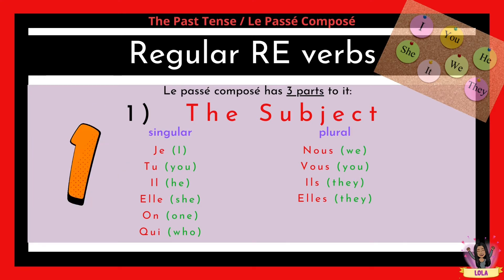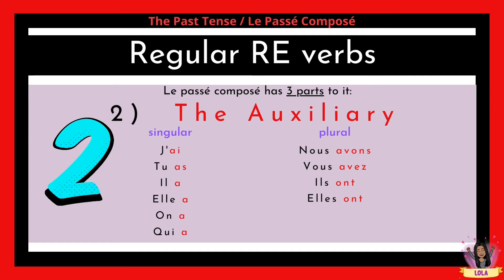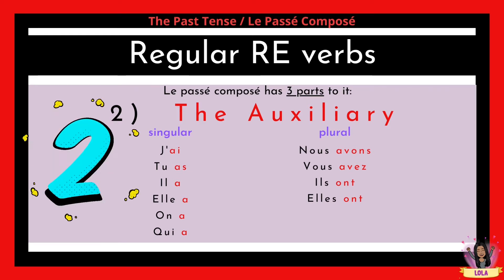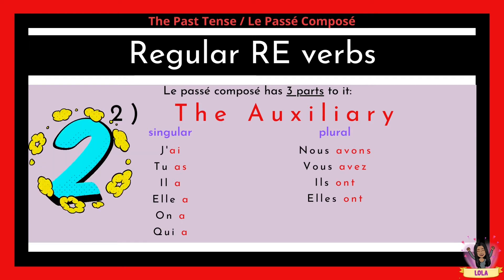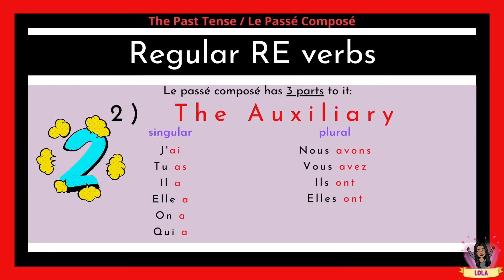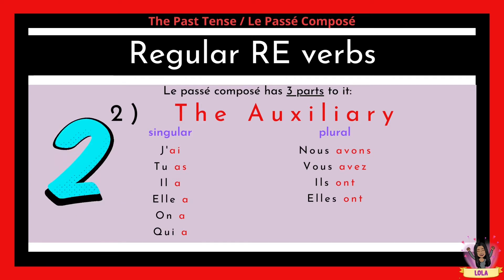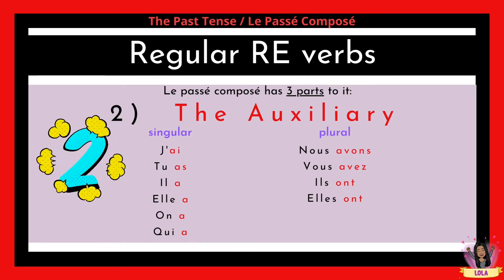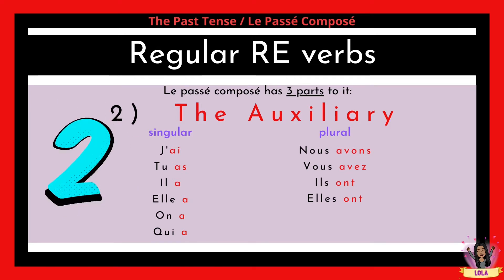Of course you can have nouns like people's names or things as well. The second part is the auxiliary, and it is the verb avoir in the present tense. The forms in red — ai, as, a, avons, avez, and ont — are all the auxiliaries that you use to create the passé composé.